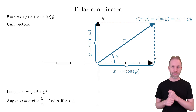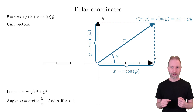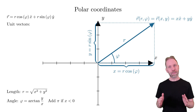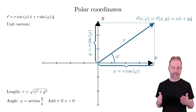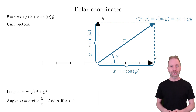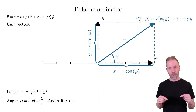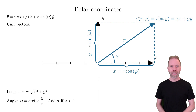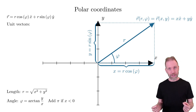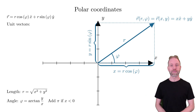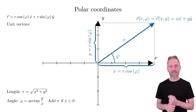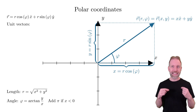The next topic is unit vectors, which is a core part of orthogonal coordinate systems. Currently, the position vector is given by r and phi, but it still uses x-hat and y-hat from Cartesian coordinates. We could also use unit vectors adapted to polar coordinates. As this is a video about general orthogonal coordinate systems, I will cover this part a bit more theoretically. I will start by illustrating it for Cartesian coordinates, as it is easiest to understand there.